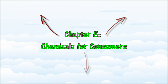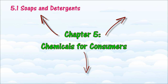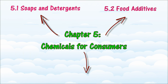In this chapter, we will learn more about the chemicals for consumers. There are three main sections in this chapter: 5.1 Soaps and Detergents, 5.2 Food Additives, and 5.3 Medicines.